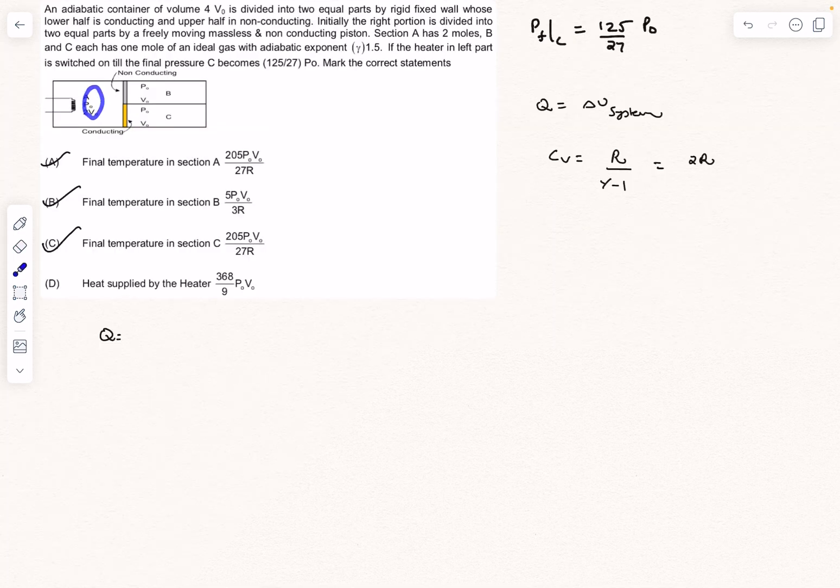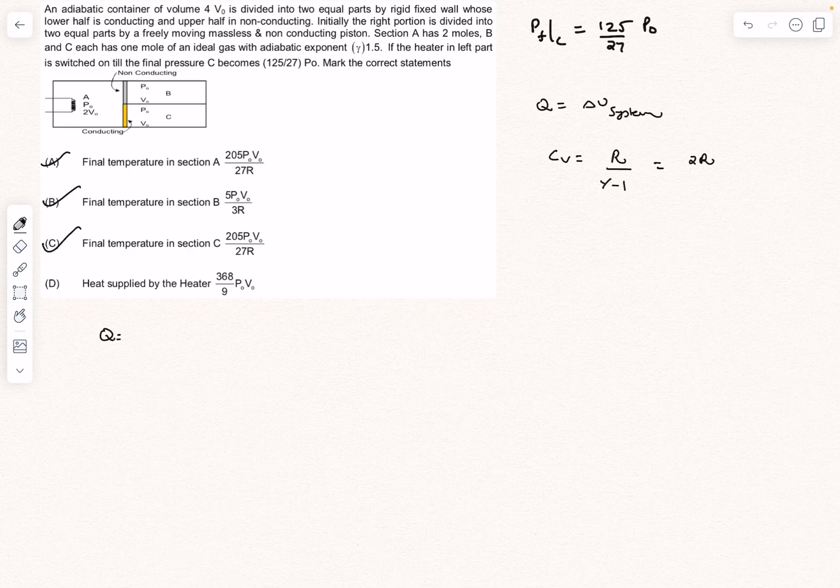If you observe, the delta T for section A and section C are the same, so we can include their moles together. A has 2 moles, C has 1 mole. So N will be 3 times CV, which is 2R, into delta T, which is T final minus T initial. T initial is P₀V₀ by R.